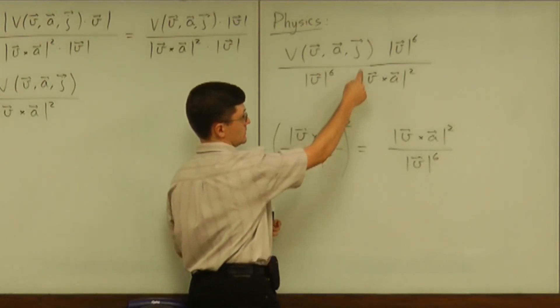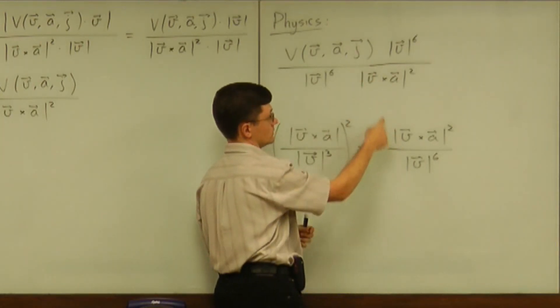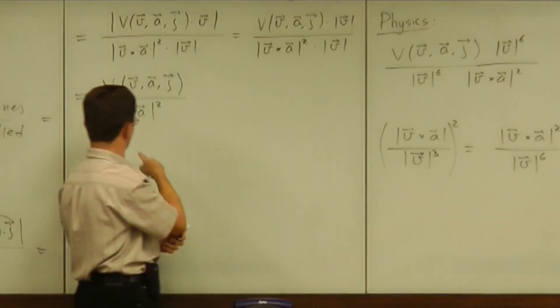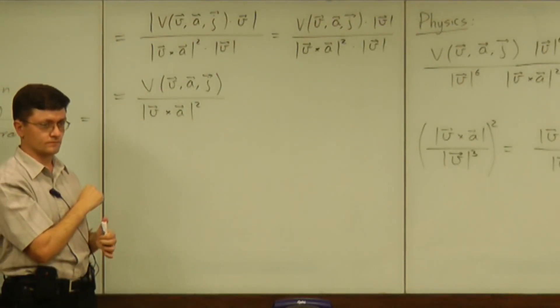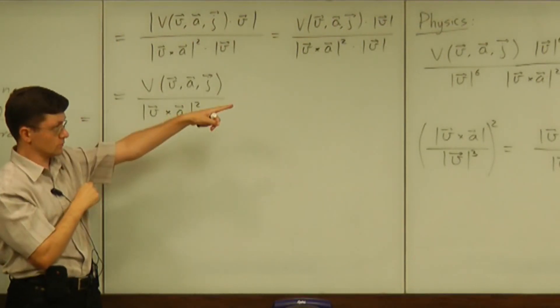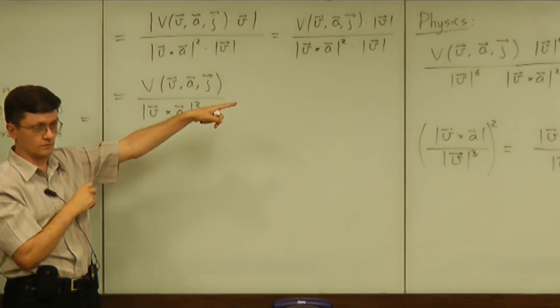What we needed is to divide by the square of the curvature to get that torsion. And that's exactly what we didn't get in physics. So, thank you very much.